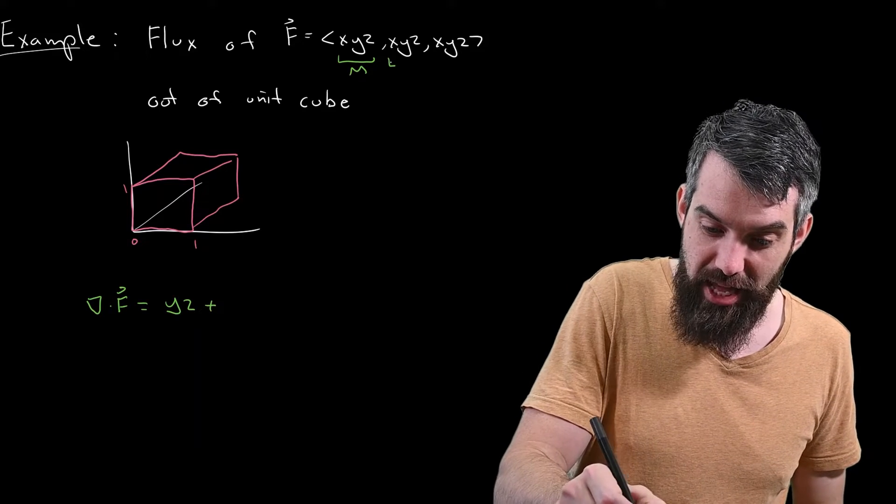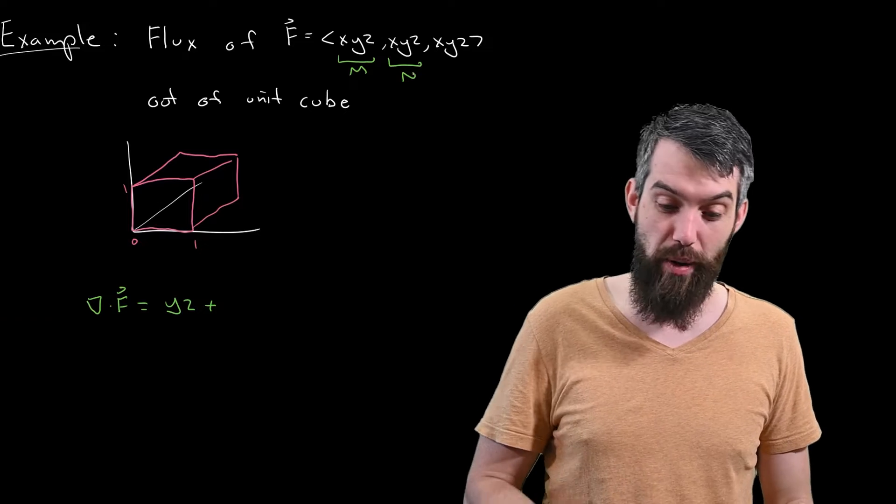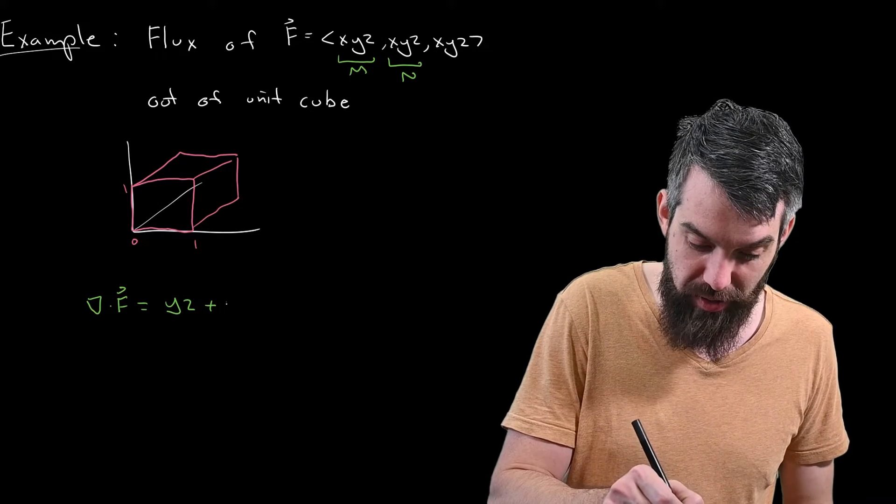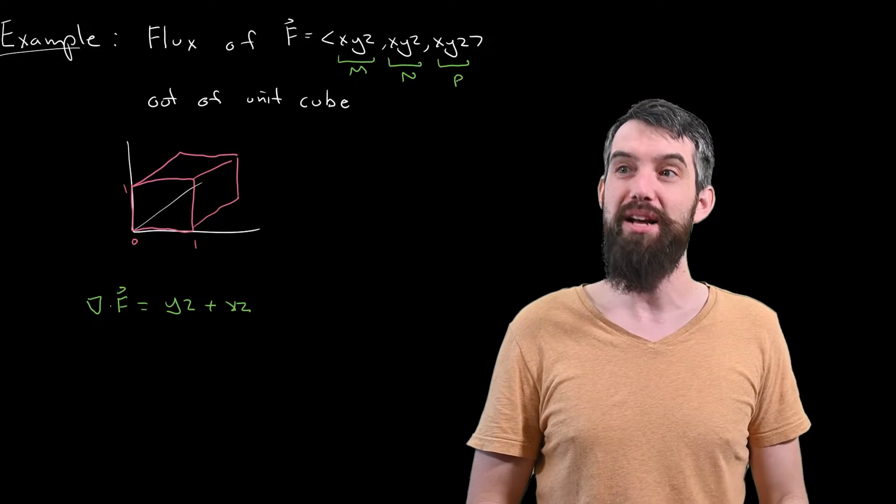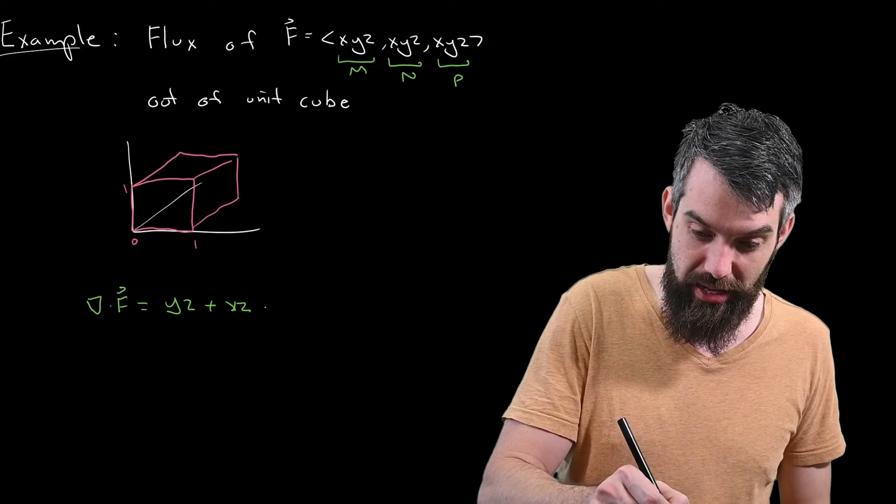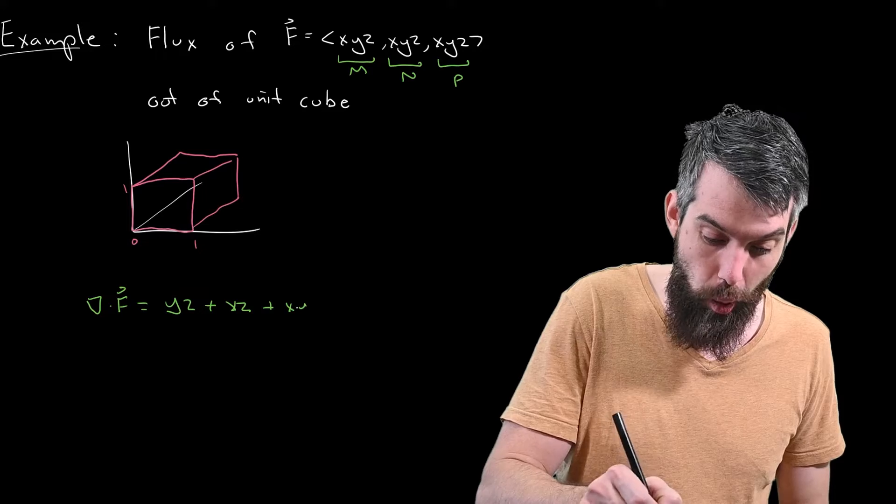Then I'm going to take the partial of the second component, which we often call n, partial of that with respect to y, which is going to leave me with an xz. And then finally the third component, which we often call p, partial of p with respect to z, is going to give me an xy.